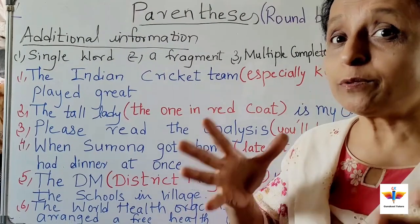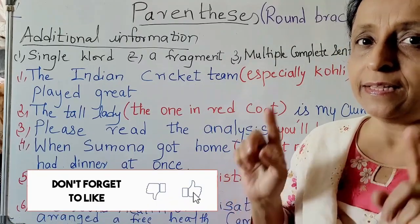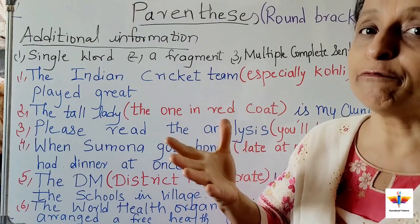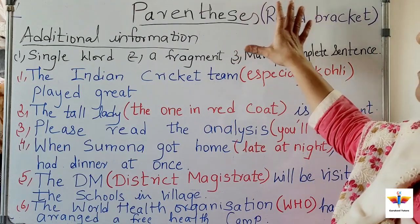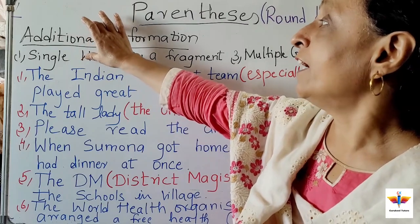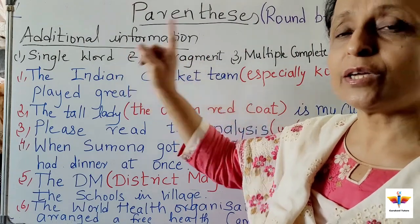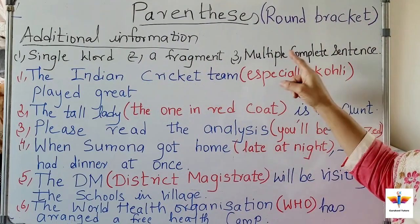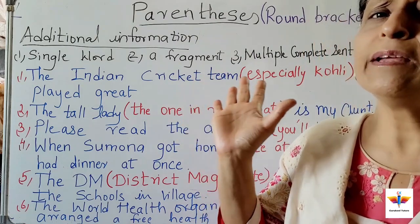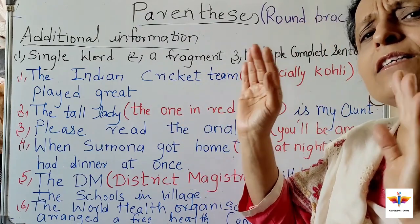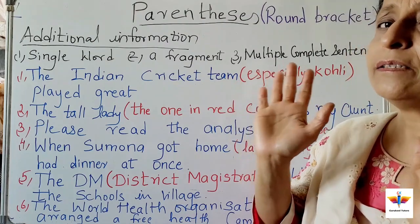Whenever you want to put some extra information in a sentence, you put it into round brackets. Those round brackets give you the extra information that is known as parenthesis. Additional information is parenthesis put into the round bracket. It can be a single word, a fragment, or multiple complete sentences — just one word, few words, many words, or a complete sentence. It will give extra information and add to the sentence, but if you don't put that bracket, the sentence will still be complete.